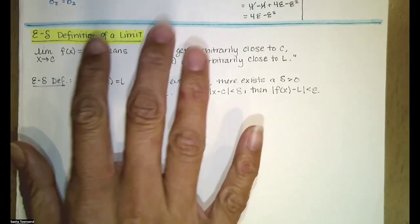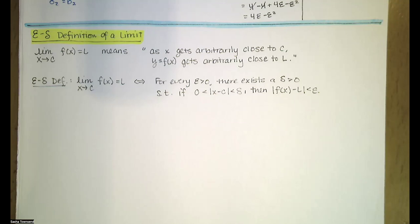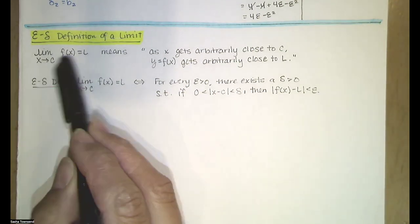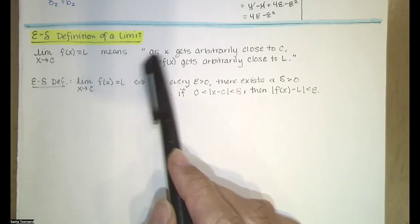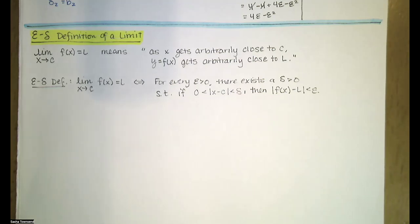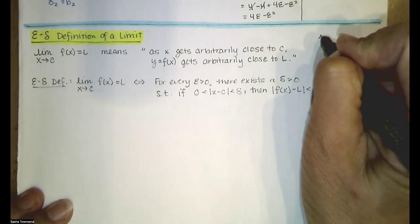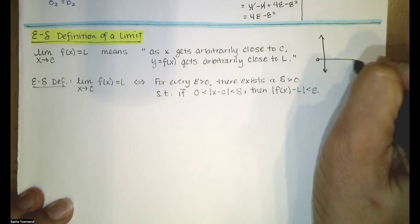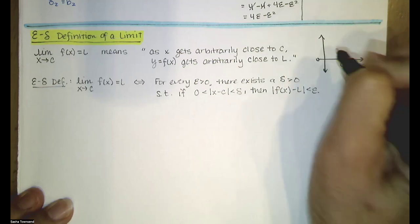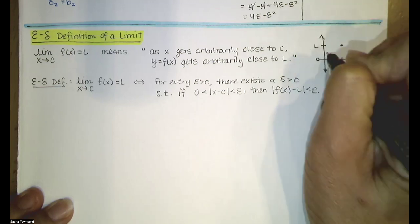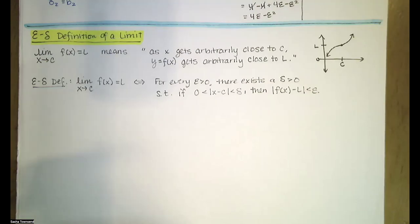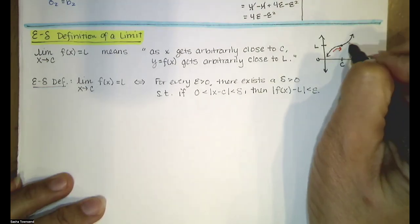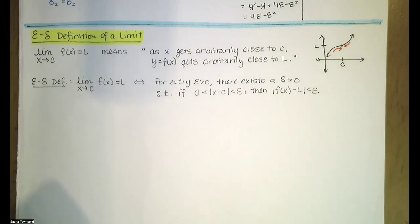In this video, we discuss the epsilon-delta definition of the limit. Recall that the limit as x approaches c of f(x) equals L basically means that as x gets arbitrarily close to c, the y values on the graph get arbitrarily close to L. If the function happened to be continuous at x equals c and y equals L, the graph might look like this, and as we approach c from the left and the right, the y values get arbitrarily close to L.